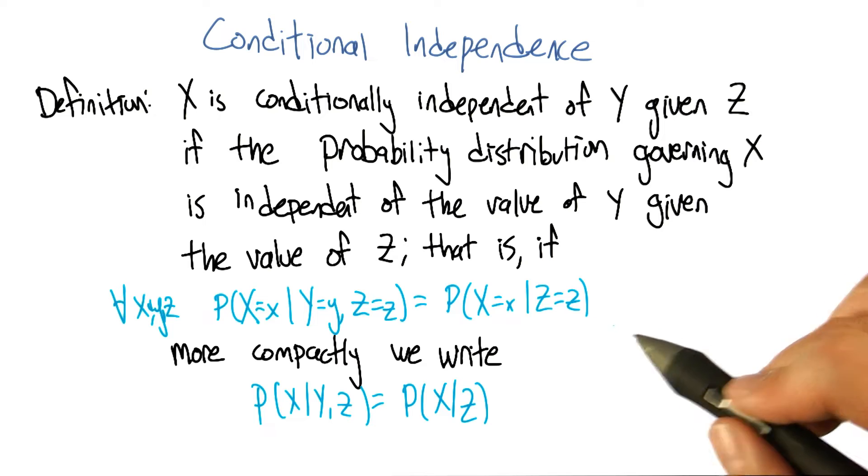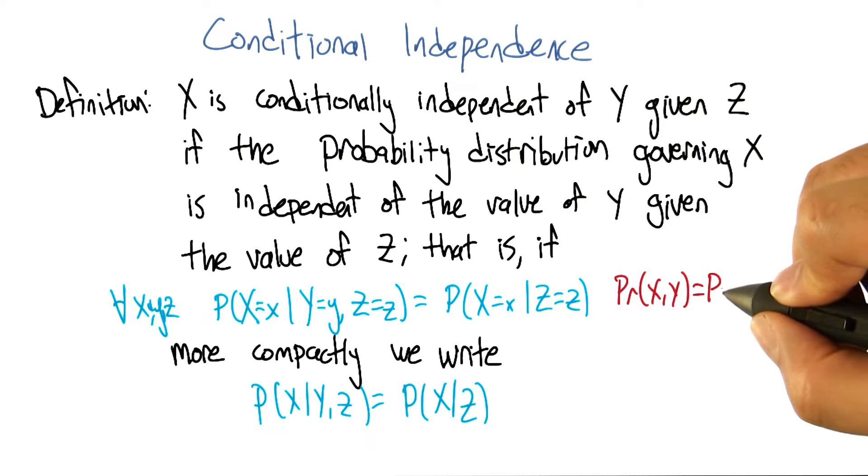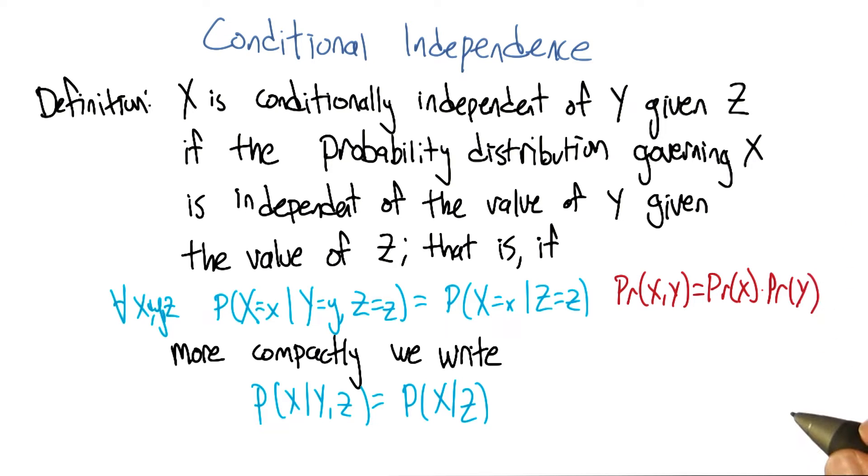So normal independence, we say the probability of X and Y is equal to the probability of X times the probability of Y. That's right. Which means, if we think about the chain rule,